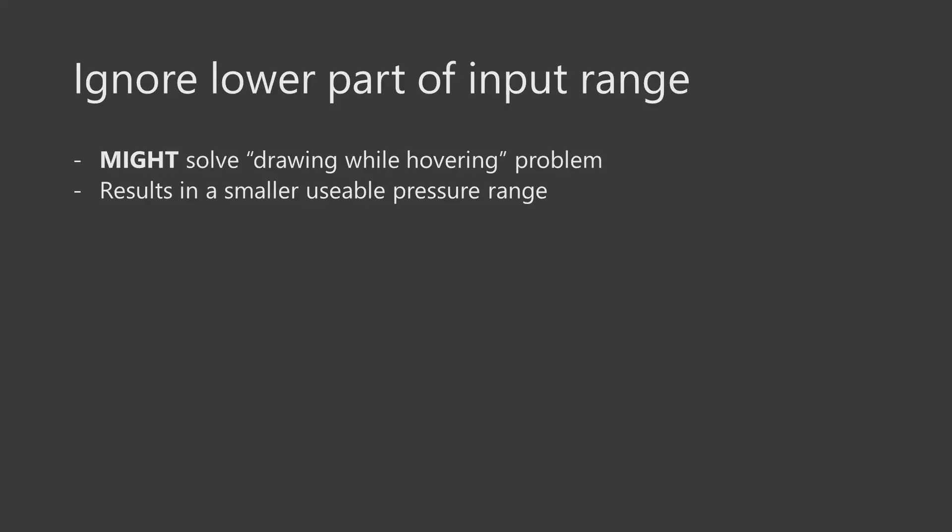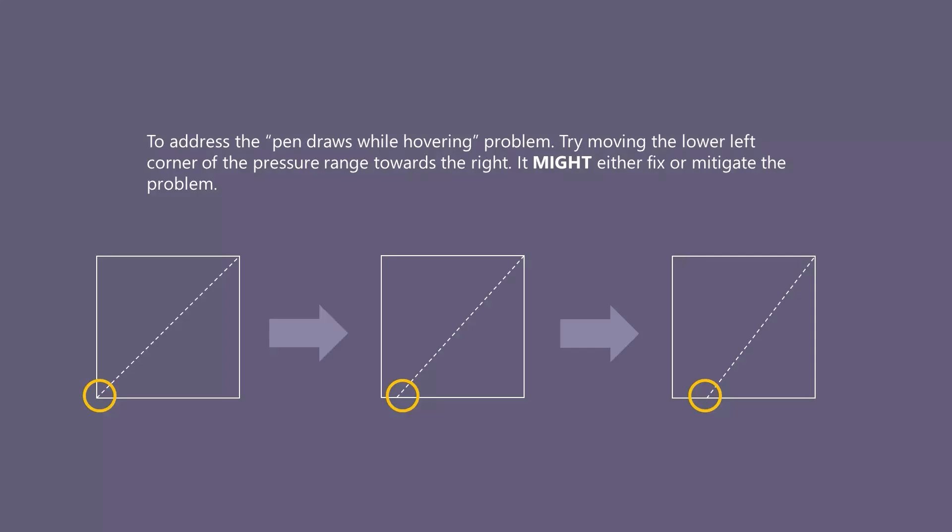For example, sometimes people drop their pen and the next time they use it, they notice the pen is drawing even while hovering when it's not touching the tablet. I will be honest that most of the time this happens, the pen is damaged beyond repair and you will just have to get a replacement pen. However, sometimes you might be able to use a pressure curve to address the situation by moving the lower left corner of the pressure curve more and more to the right until the pen starts drawing only when you're pressing down. I'm not saying this is likely to work, but it is worth exploring. And even if it does work, you'll have to press down harder to draw — but at least it might be a temporary mitigation until you get a replacement pen.